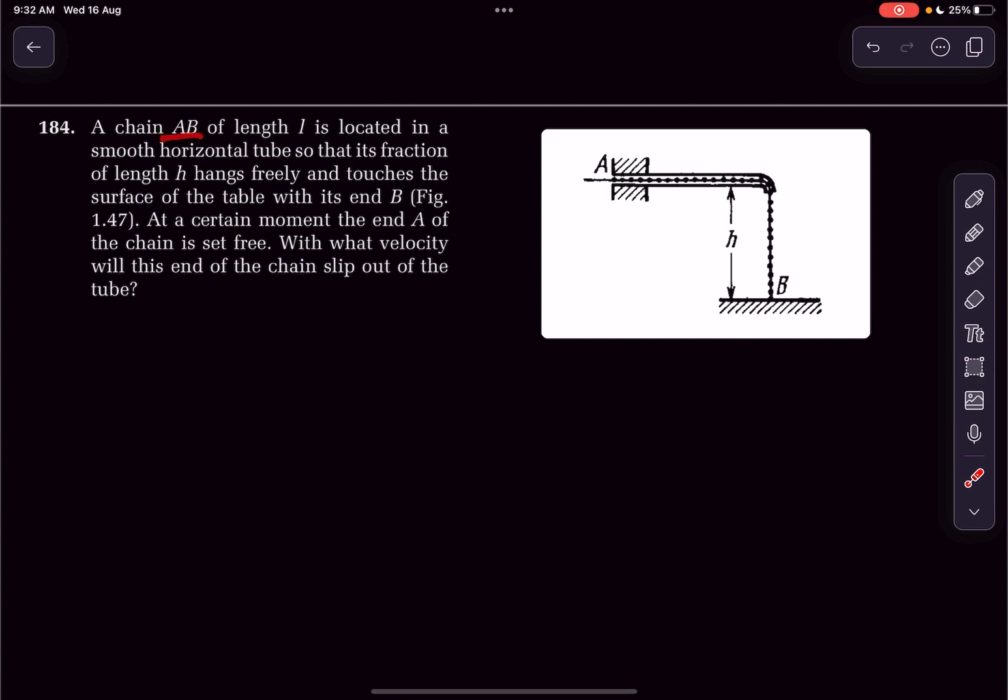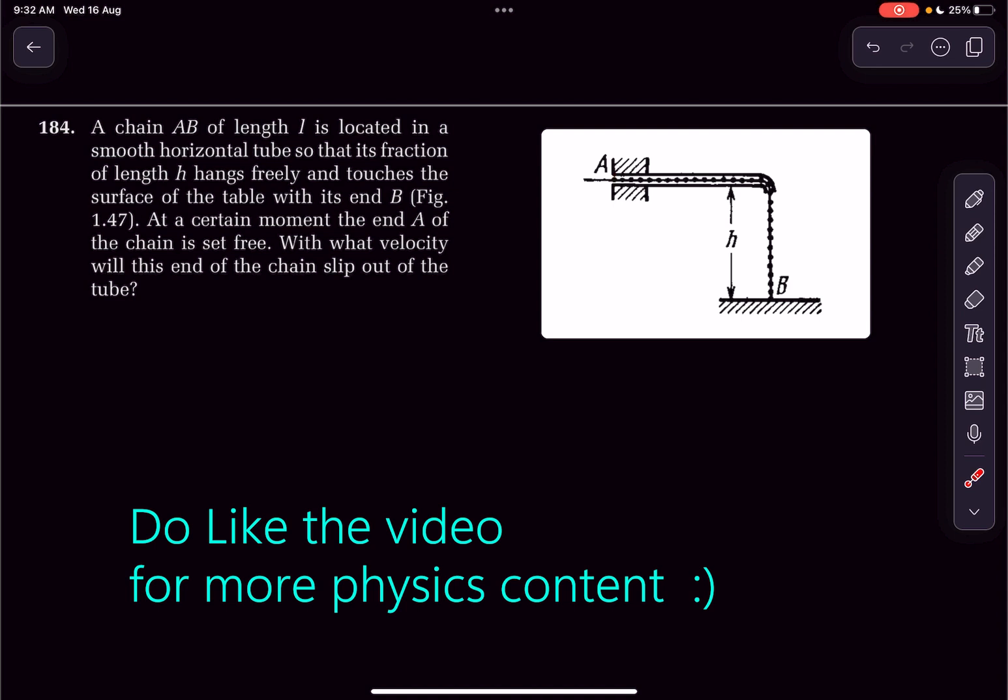We have a chain AB whose length is L. It is located in a smooth horizontal tube so that its fraction of length h hangs freely and touches the surface of the table. At a certain moment, the end A of the chain is set free. With what velocity will the end of the chain slip out of the tube?